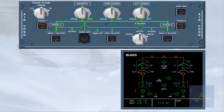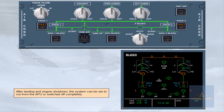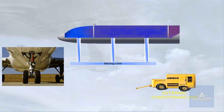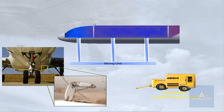After landing and engine shutdown, the system can be set to run from the APU or switched off completely. An external conditioning unit can also be connected via a low pressure connection point on the underside of the aircraft. The low pressure air is fed to the mixing unit and then into the three zones. There are no indications in the cockpit to show that an external conditioning unit is in use.